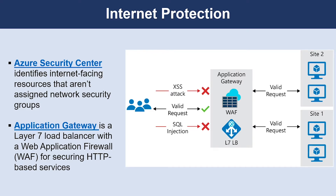Azure Security Center will identify internet-facing resources that don't have network security groups associated with them, as well as resources that are not secured behind a firewall. To provide inbound protection at the perimeter, the first method is Application Gateway, which is a Layer 7 load balancer that also includes a web application firewall to provide advanced security for your HTTP-based services. The Web Application Firewall is based on rules from the OWASP 3.0 or 2.2.9 core rule set and provides protection from commonly known vulnerabilities such as cross-site scripting and SQL injection.